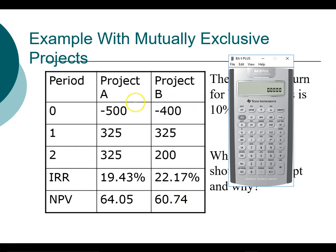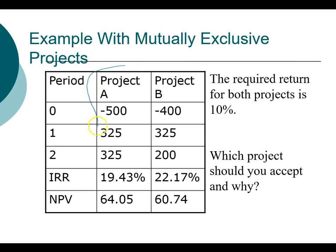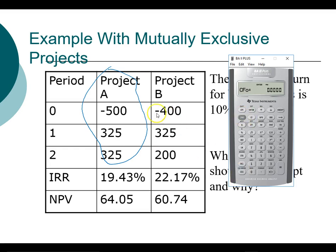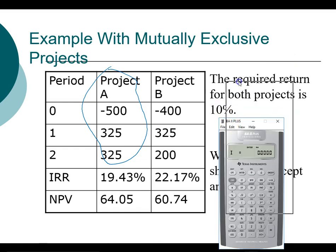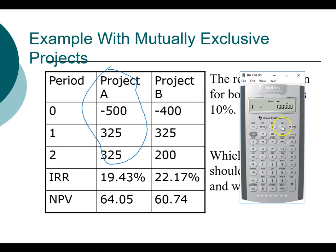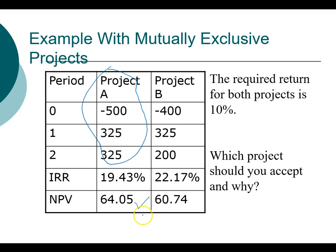Let's start by computing the net present value and the internal rate of return for project A. Let's clear our calculator. For project A, the cash flow in year 1 is $325, and the cash flow in year 2 is also $325. Going to NPV, our discount rate is 10% for both projects — so 10%, enter, and compute the net present value. The net present value turns out to be $64.05.